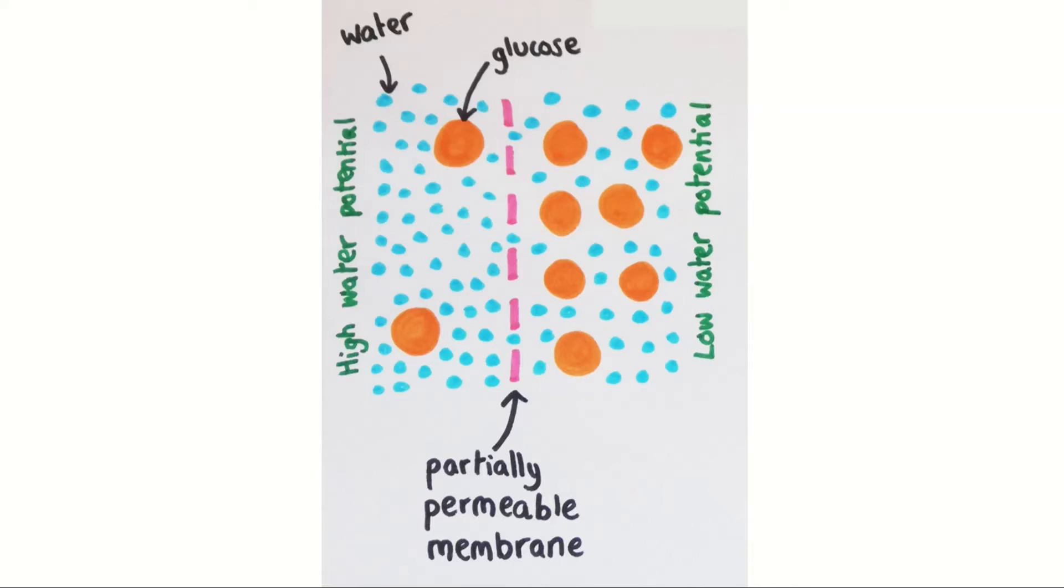Osmosis, like diffusion, is a passive process. It does not require energy input, as it relies on the constant random movement of water molecules. The process will continue until both sides of the membrane reach an equal water potential.